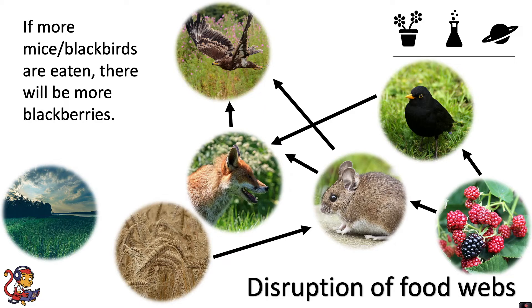If more mice and blackbirds are eaten, there will be more blackberries because fewer will be eaten by the mice and the blackbirds. And if the fox were to eat more mice, you might have more wheat growing in your crop field as well. So by taking just one organism out, or just reducing the numbers slightly, it can have devastating impacts on the whole food web.